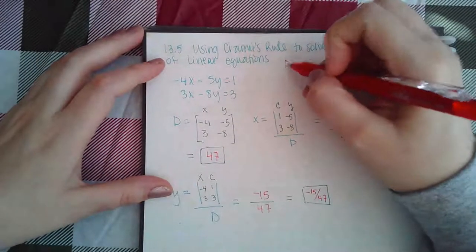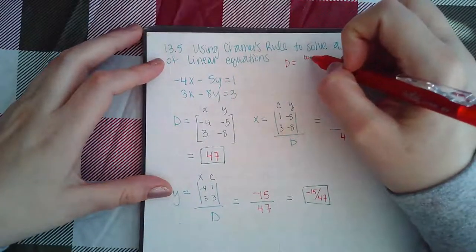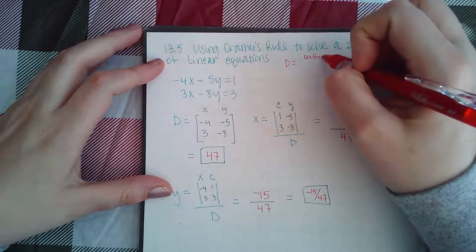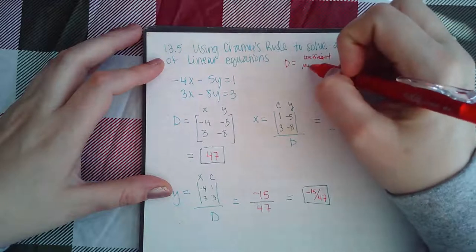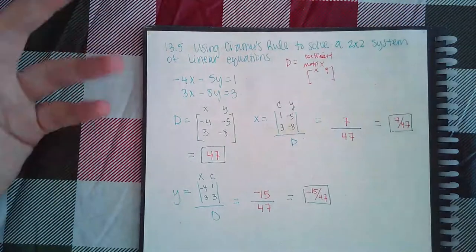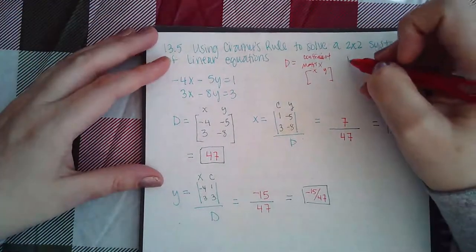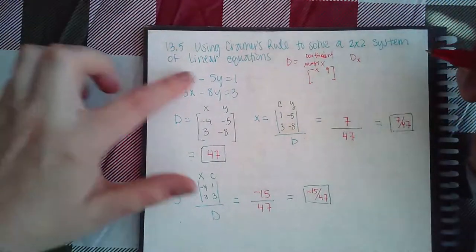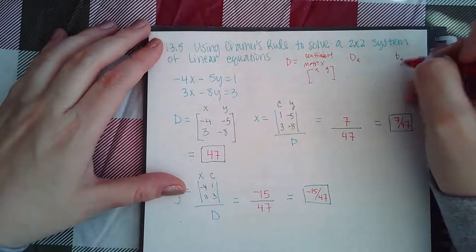You need D, which is going to be the coefficient matrix, which means you're basically just using the x and y columns of the augmented matrix. Then you're going to need for 2x2, there's only two variables, so there's Dx and Dy.